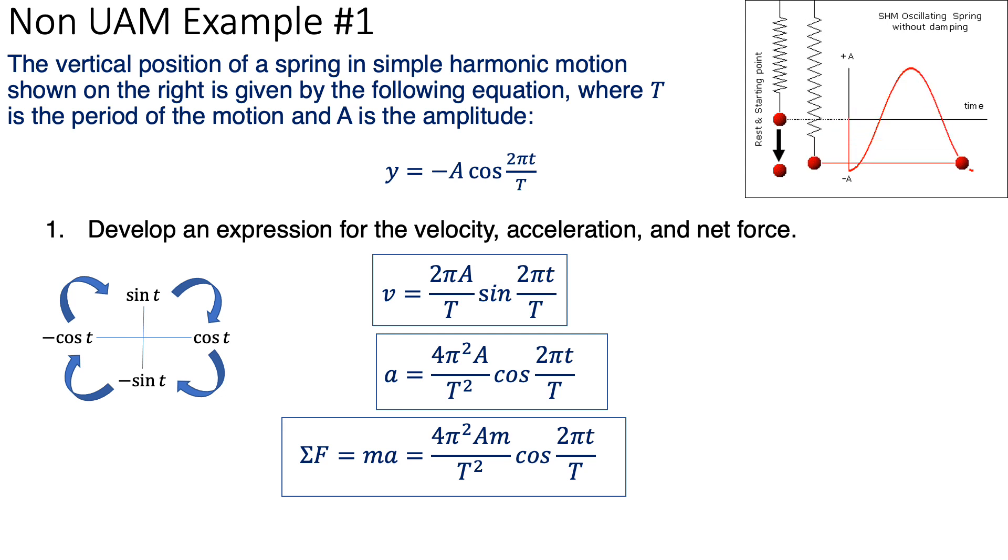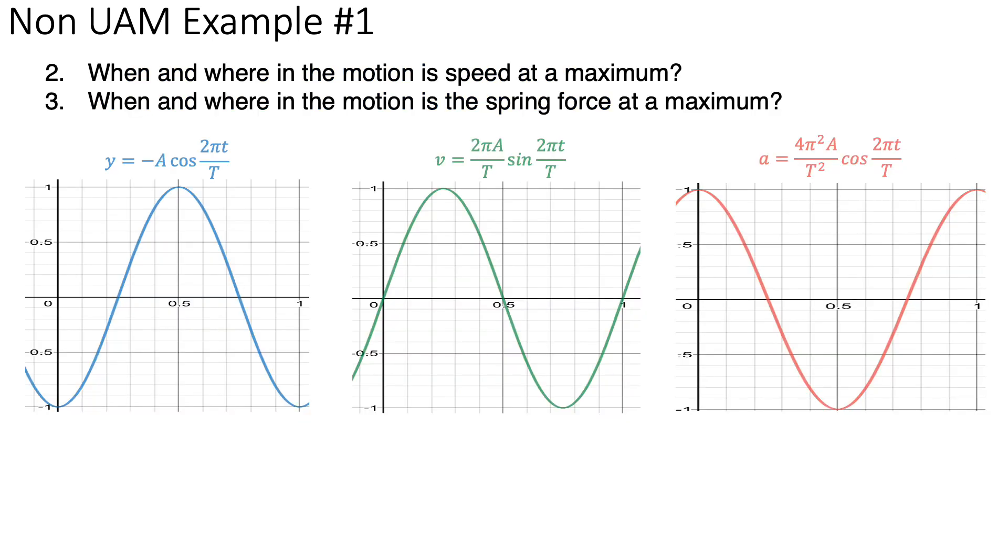So, to answer part two and three, we're going to look at the graphs. So, the displacement graph is the blue one on the far left. The velocity one is in the middle. And the acceleration on the right. And let's analyze the motion at four different points, starting with point zero.